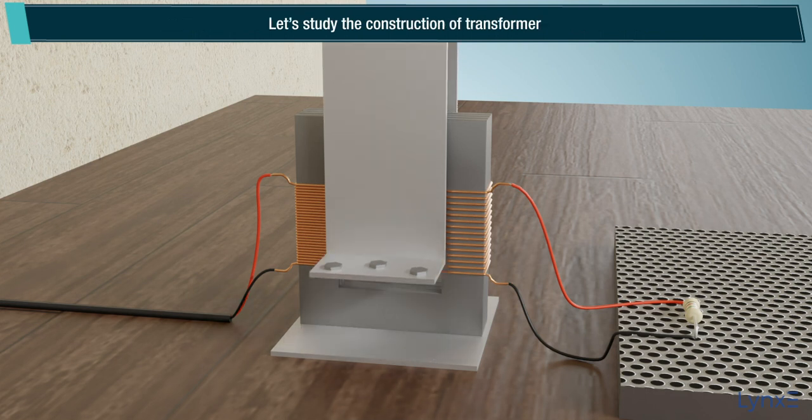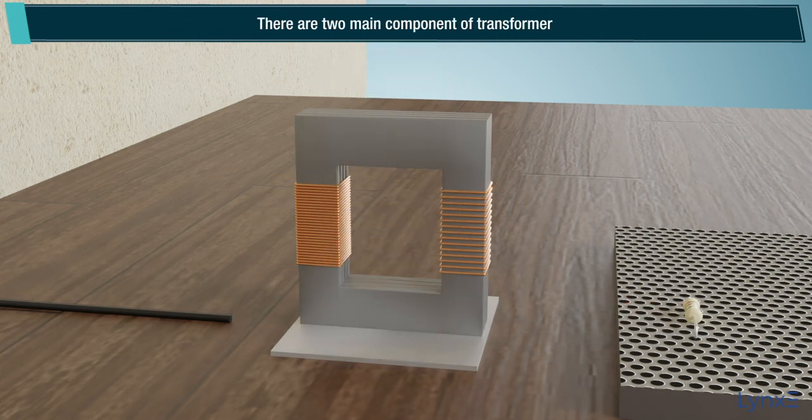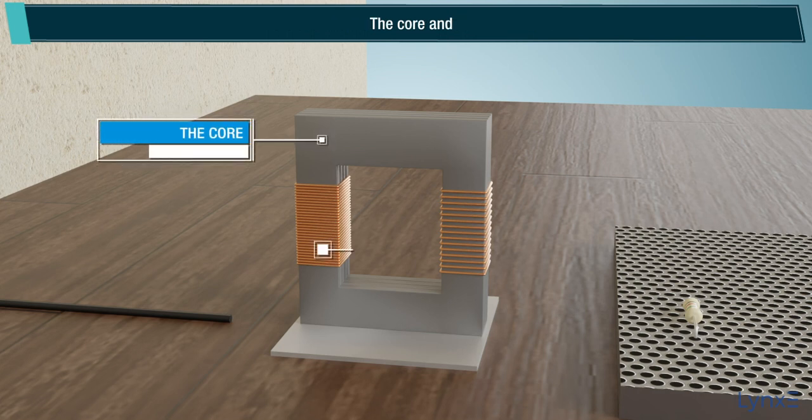Let's study the construction of transformer. There are two main components of transformer: the core and the coil.